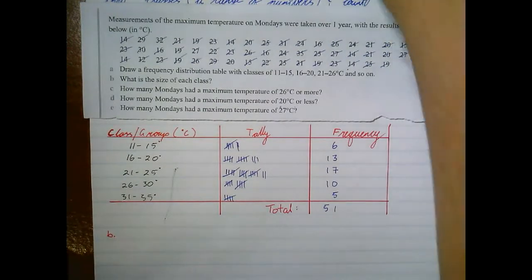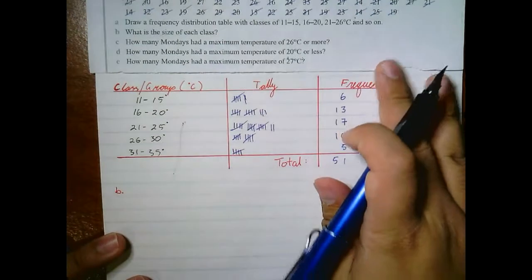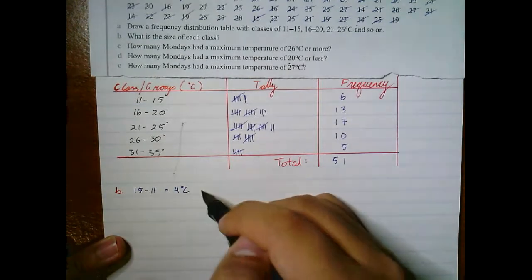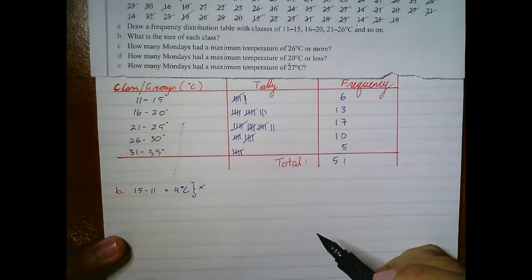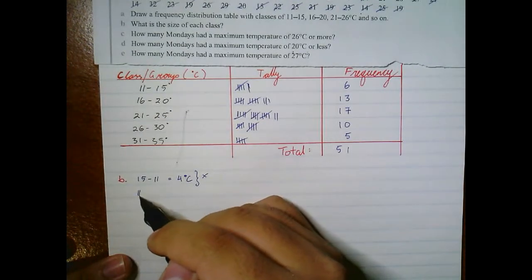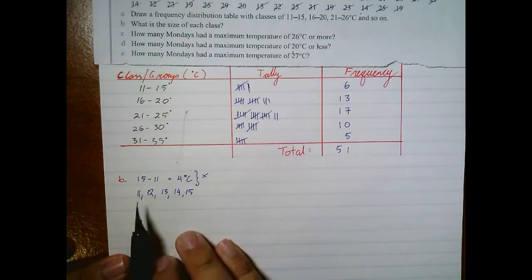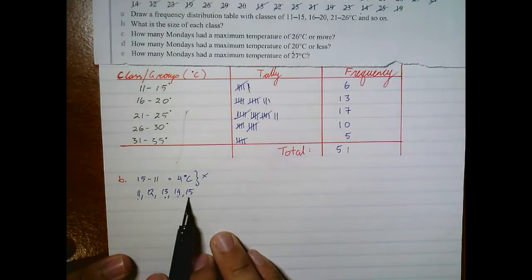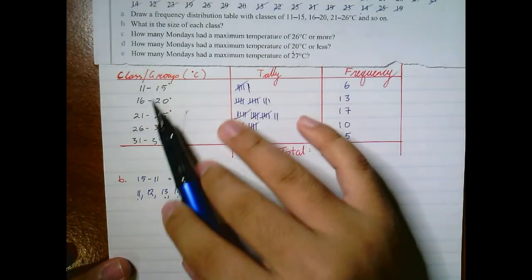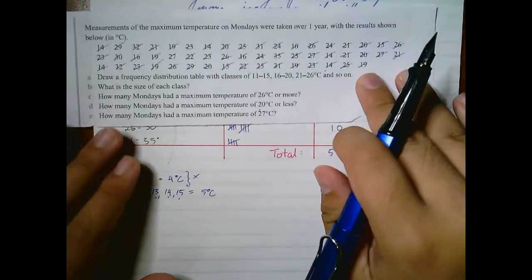The size of each class. Some might be tempted to answer 15 take away 11, that is 4 degrees Celsius, right? This is however wrong. The size of each class, if we write them out, because 11 is included in this one. So if we write them: 11, 12, 13, 14, 15. That's actually 1, 2, 3, 4, 5. That's 5 degrees. So there's a 5 degree difference between each of these. So each class has 5 degrees.